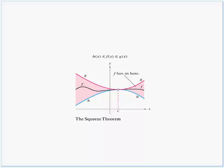Here's what we have graphically: g(x) is always on top, h(x) is always on the bottom, and f(x) is always somewhere in between. At point c, g(x) and h(x) come together — they pinch together and have the same limit L. Since f is always between h and g, it also gets squeezed in between. If g and h both come together at limit L and f is stuck in between, then f(x) also has a limit equal to L.